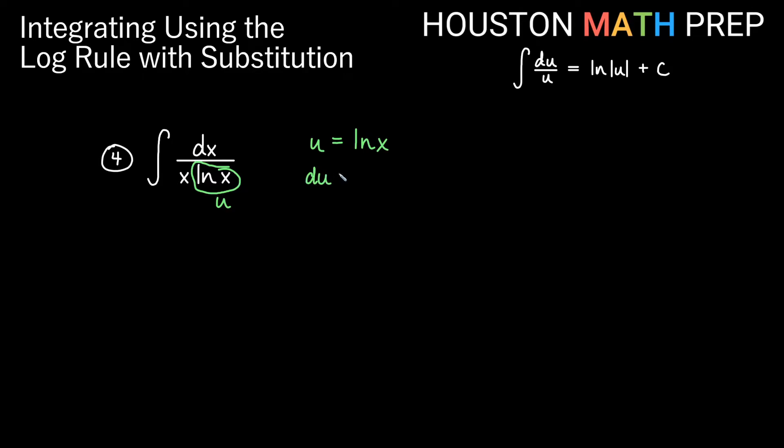And the reason we choose that is because now dx over x, think about what we get here. What's the derivative of ln x? Well it's 1 over x. So du is equal to 1 over x dx. And this here, dx over x, is the same as 1 over x dx. So this is actually our du. So we do get du over u, but not by choosing the entire denominator for this one to be our u-substitution. Okay, we do get our log rule here though.